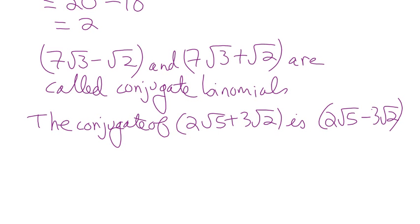The conjugate of 2 root 5 plus 3 root 2 is the same two terms with the opposite sign: 2 root 5 minus 3 root 2. We use conjugates to set up a difference of squares and get rid of the radicals. Why do we do that? To rationalize the denominator when dividing radicals — but that's tomorrow's lesson.